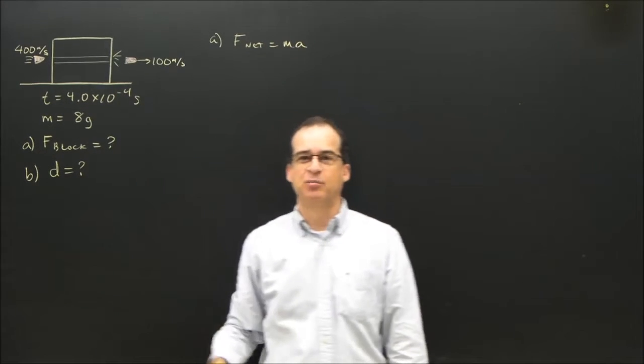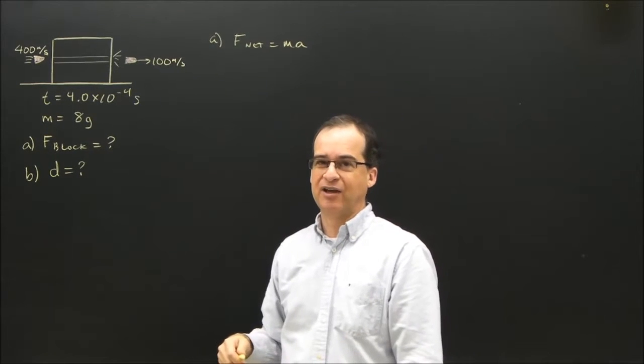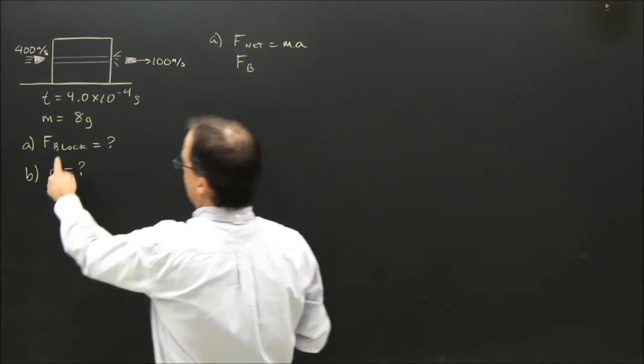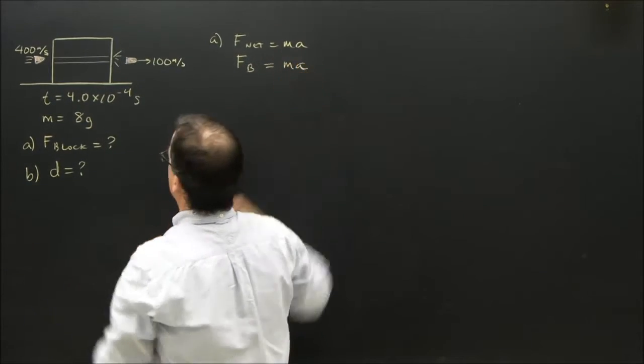What are the forces on the bullet? Well, the force in the direction that we're interested in is the force of the block. So the force of the block is equal to the mass of the bullet times the acceleration of the bullet.